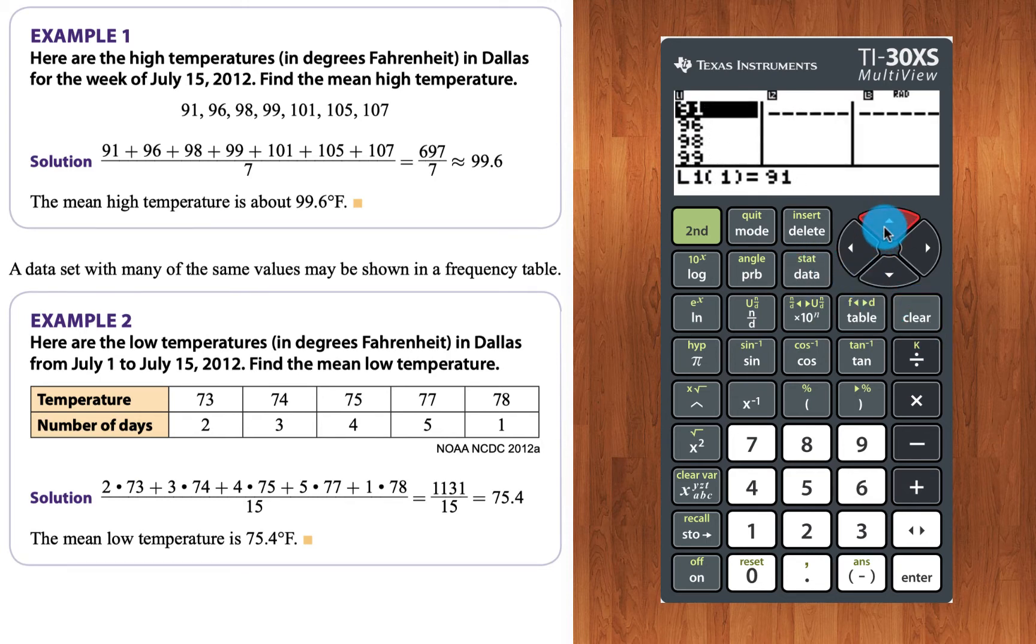I'm going to go up to the list here and I'm going to hit the delete key a whole bunch of times and clear out the data. Now the way that you enter data in a frequency table is by typing in the data value like so using the right directional arrow key and then putting 2.